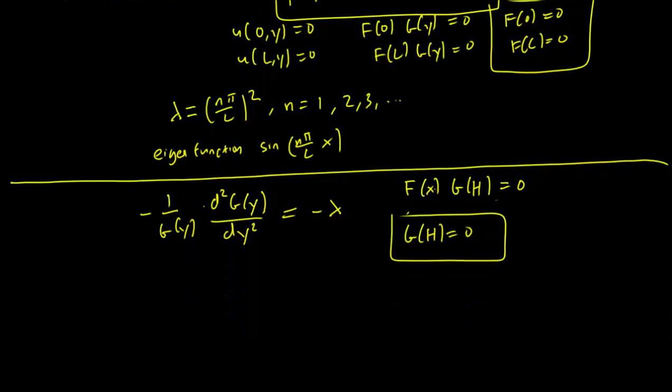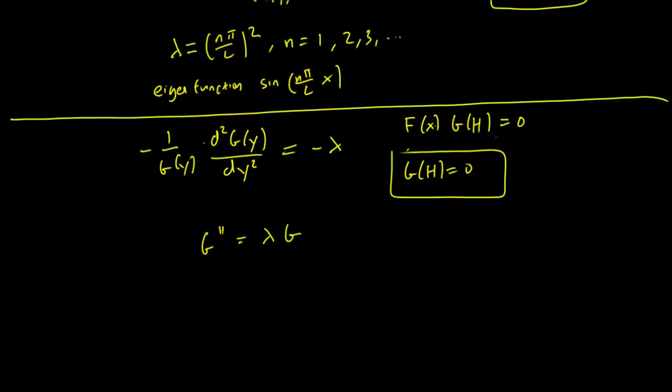Let's rewrite our equation as g double prime equals lambda g. And I'm going to leave this either an in-class problem or a homework problem. But we're going to obtain g(y) is equal to c times sinh of square root lambda times (y minus h). Here, sinh of theta, as a reminder, is just going to be e to the theta minus e to the minus theta over 2.